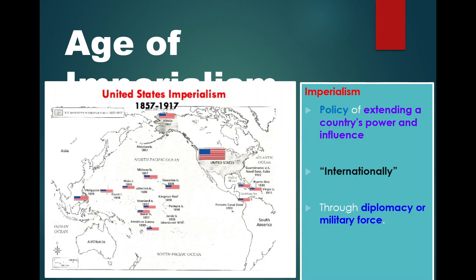Imperialism is a policy of extending a country's power and influence. During this period, the United States becomes imperialistic internationally. But let's think about imperialism as taking land from other countries — during this entire period of manifest destiny and pushing west, the United States was taking land from sovereign territories, namely Native American tribes.